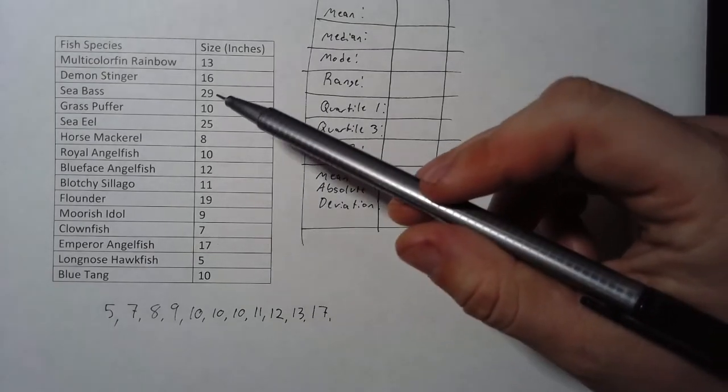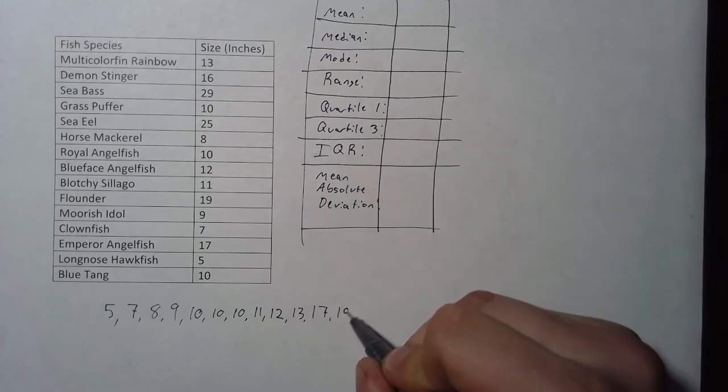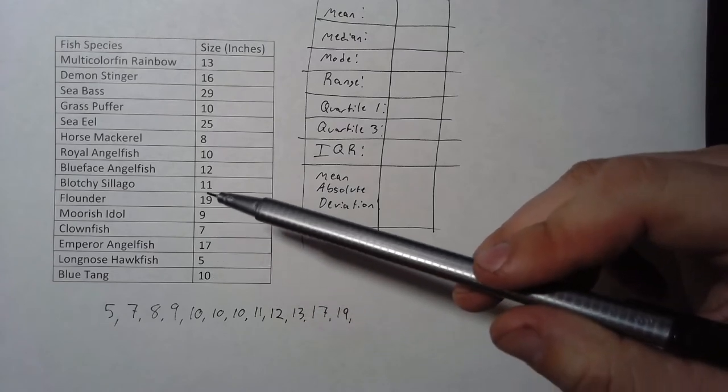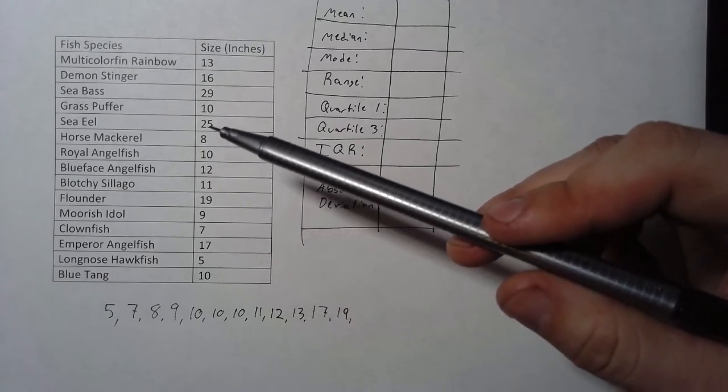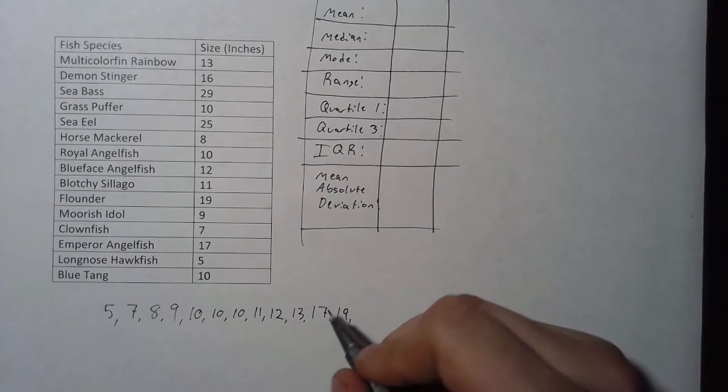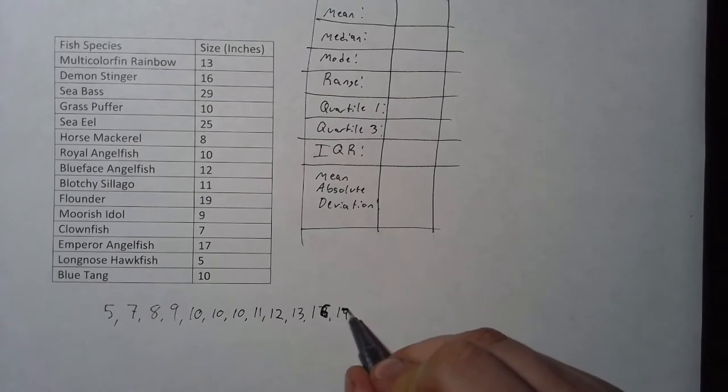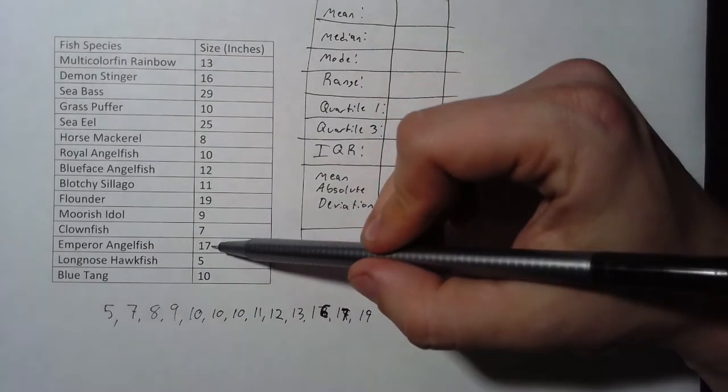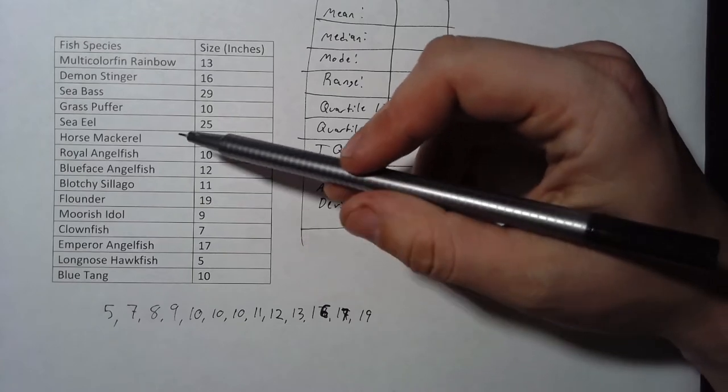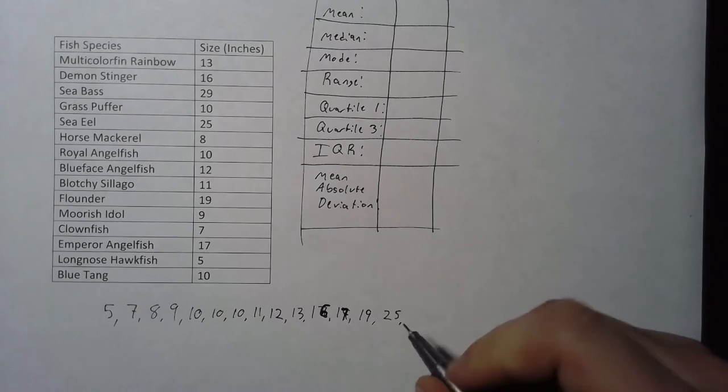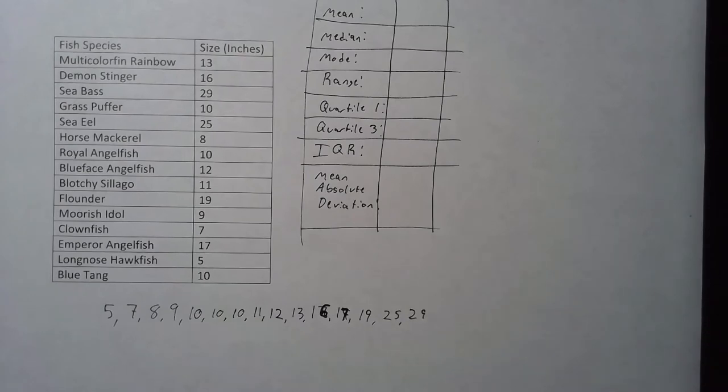17. 19. The flounder would be next. So getting into some pretty big fish. And the last three, I actually missed one. The demon stinger should have gone back here. So let me go back and fix that. So we got a 16, 17, then we have a 19. 16, 17, then 19. Then we have the sea eel and sea bass, 25 inches long and 29 inches long. So nearly 3 feet long.